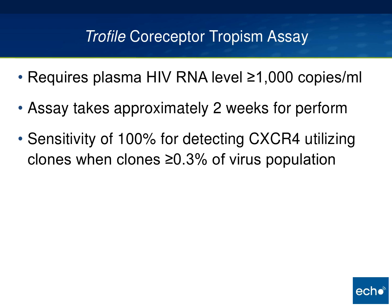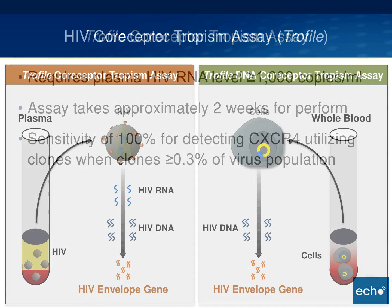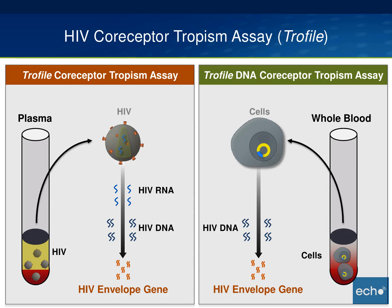The Trofile tropism assay requires a viral load of at least 1,000 copies per milliliter and takes at least two weeks to perform. Importantly, it has a sensitivity of 100% for detecting CXCR4-utilizing clones — that is, X4 virus — if the clone makes up at least 0.3% of the virus population. So even a tiny amount of X4 virus will be detected. It is a very sensitive test.